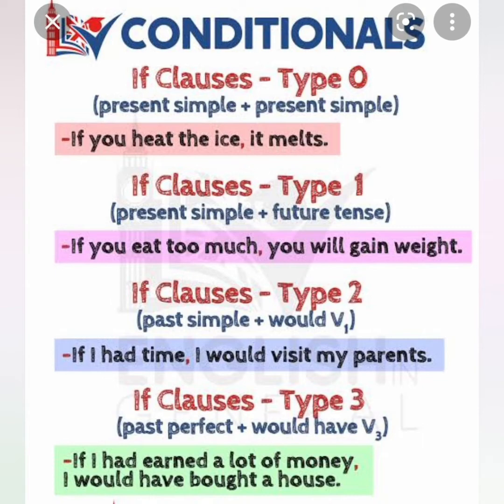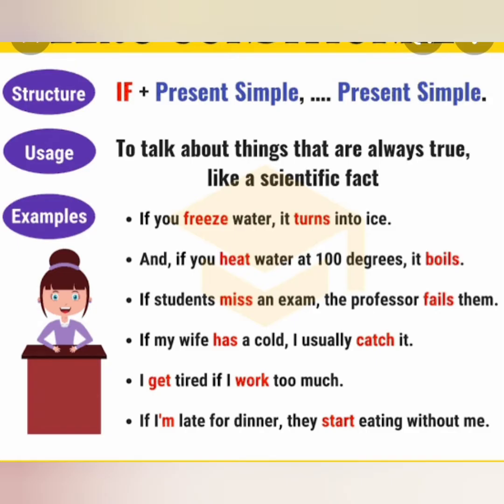Type 2 uses past simple plus would plus V1. 'If I had time, I would visit my parents.' 'If I had time, I would visit my friends.' You see the condition itself is an imaginary one. Type 3 uses past perfect plus would have plus past participle. 'If I had earned a lot of money, I would have bought a house.' Just learn the structure with the words — don't worry too much about the tenses.